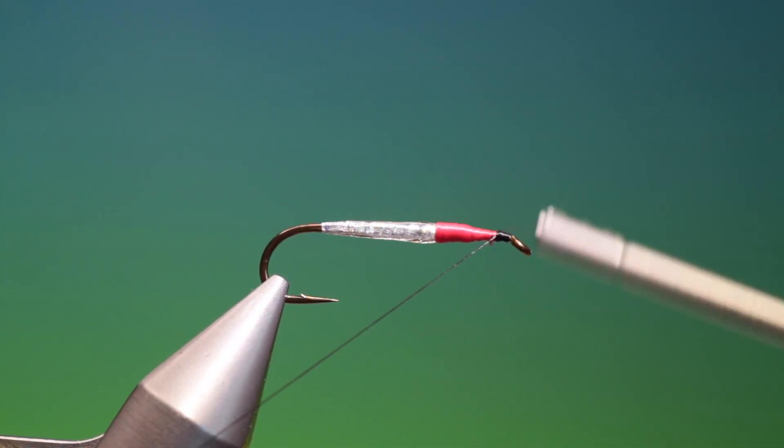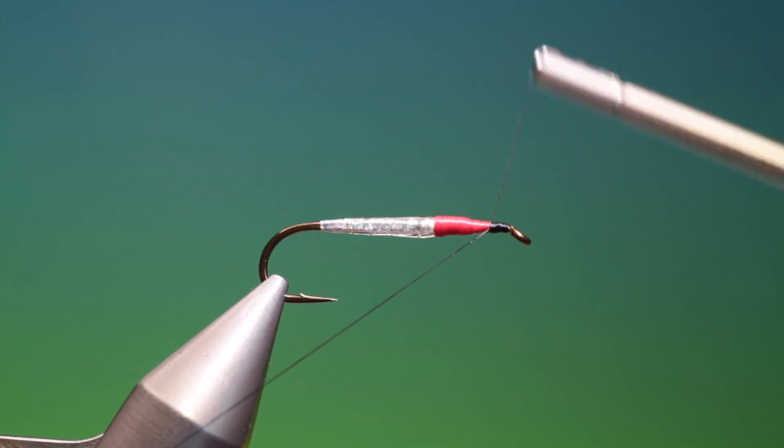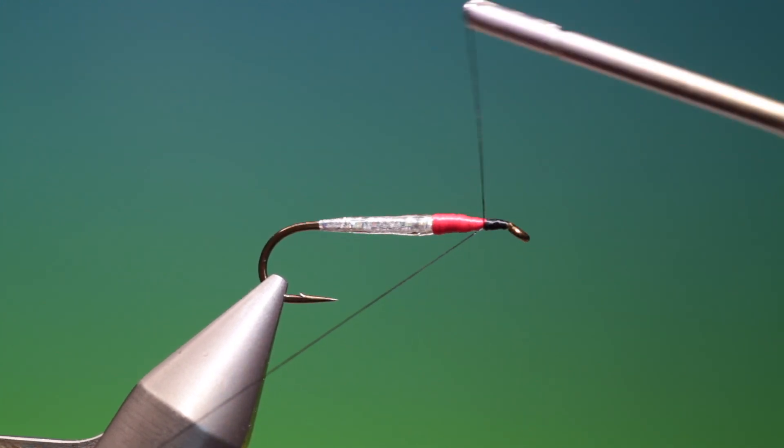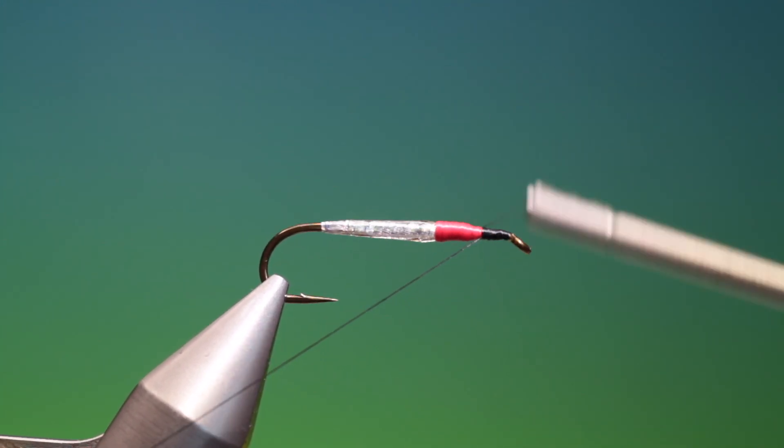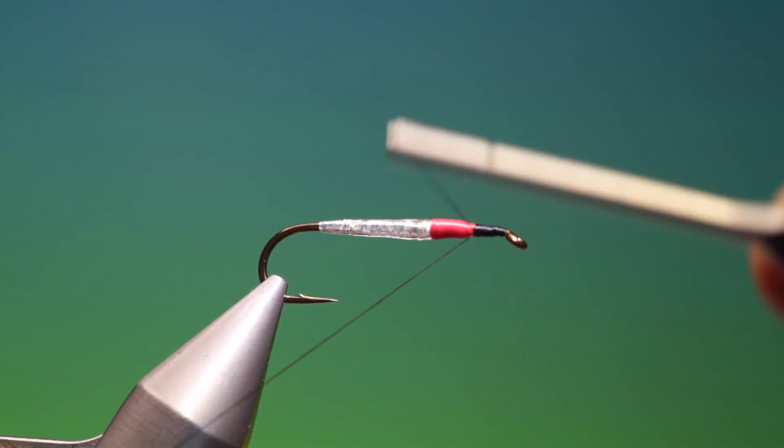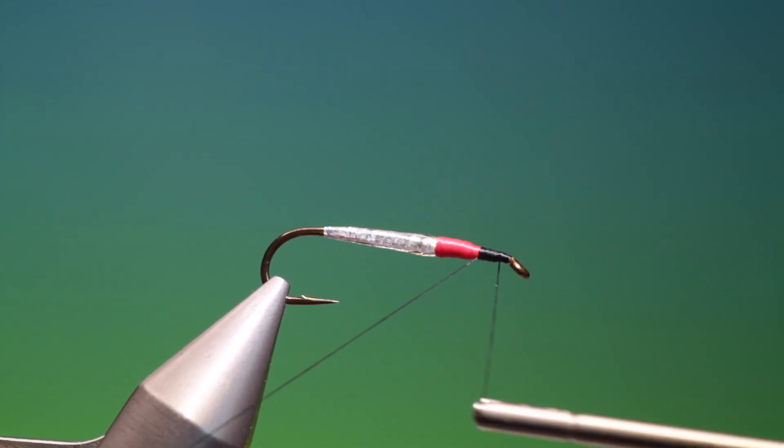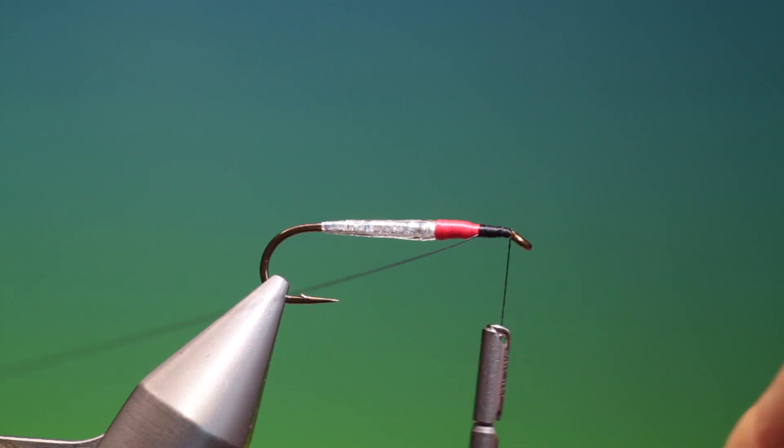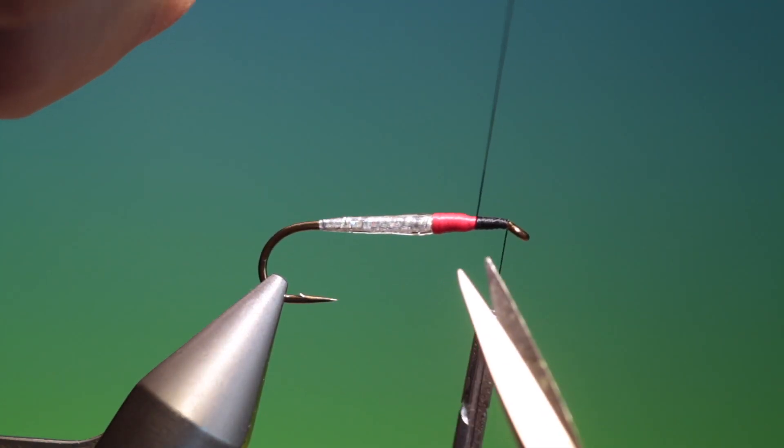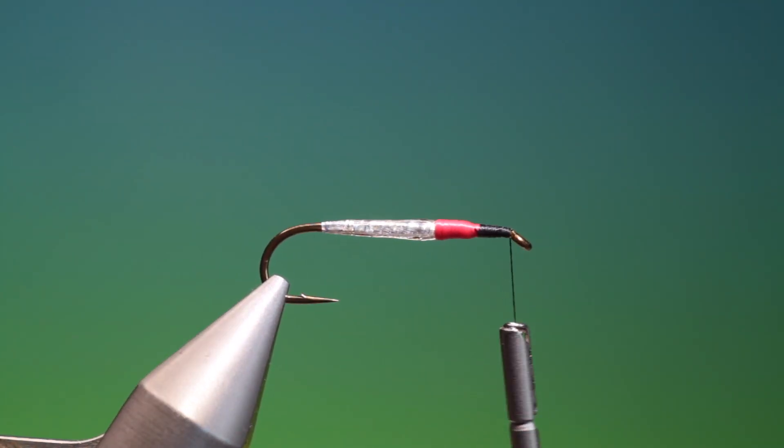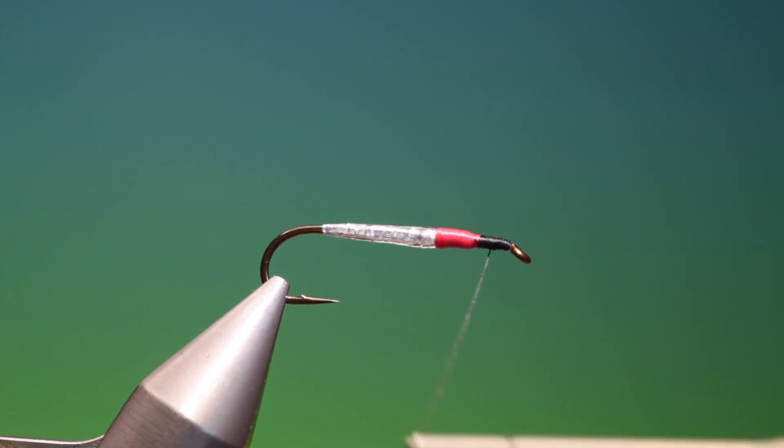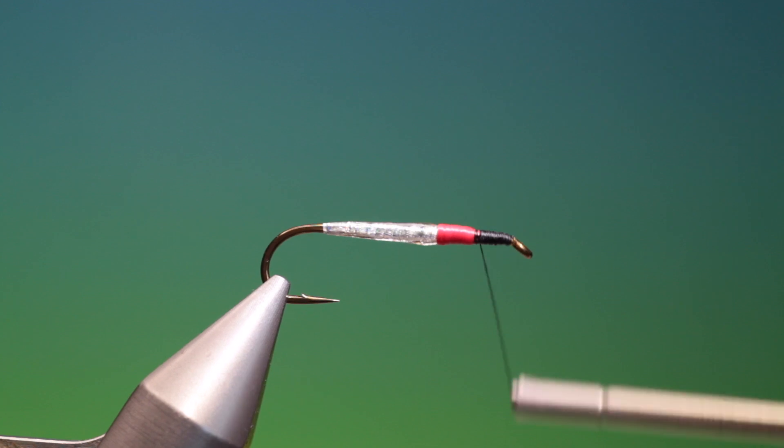Start at the hook eye. We'll make our way back. To back there. And then go forward again. Remove that. Control our thread. And we'll go back. Into the red.